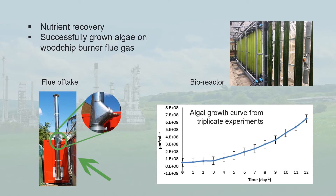This slide shows how you can recycle CO2 from an off-gas. On the left-hand side you can see the back of an industrial wood chip burner, with the off-take system highlighted in green. That's simply a gas outlet which we pump through to our bioreactor. On the right-hand side you can see typical growth curves from growing algae on waste CO2 from a flue stack. This process works really well, but you have to pre-filter the gases before feeding them into the bioreactor, because the off-gas contains quite a lot of particulate materials.